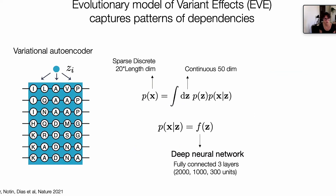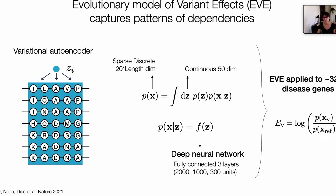Variational autoencoders or latent variable models try to solve the problem of modeling high-dimensional discrete and super sparse data by assuming that it can be described in a lower-dimensional continuous space that I'm calling Z. If we describe the relationship along sequence space with these latent variables Z as a fully nonlinear fully connected neural net, then this model is extremely expressive and can capture very complex dependencies along the sequence. This is what we've done in a recent work in a model that we called EVE for short. We applied such a model to about 3,000 disease genes and built a pathogenicity score built upon this ratio.